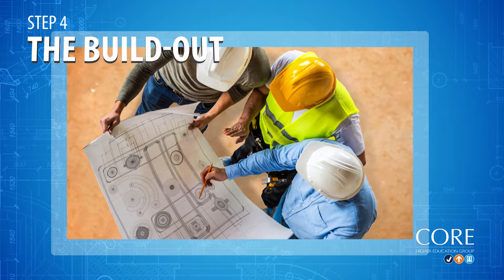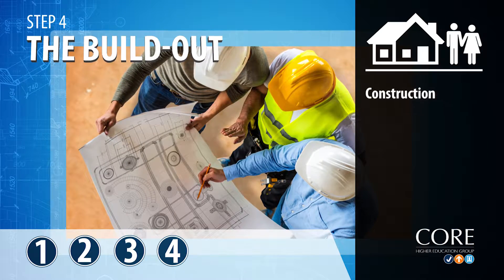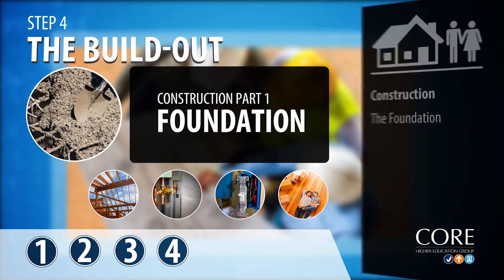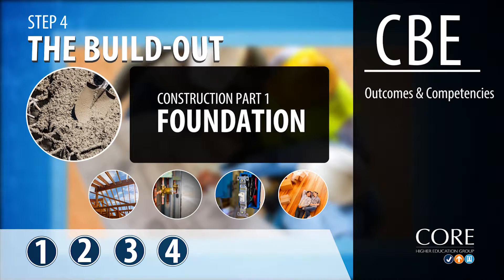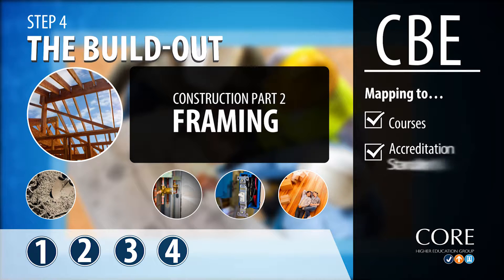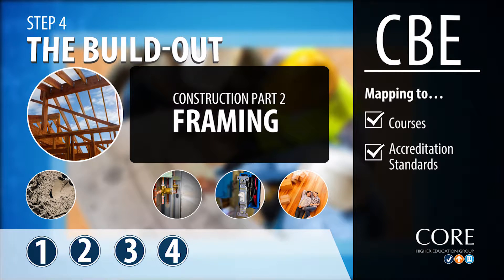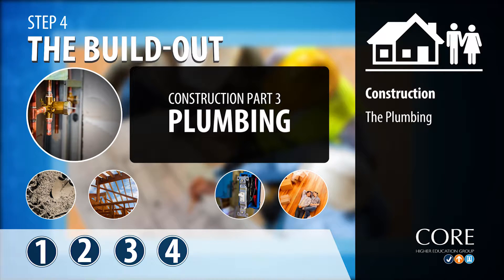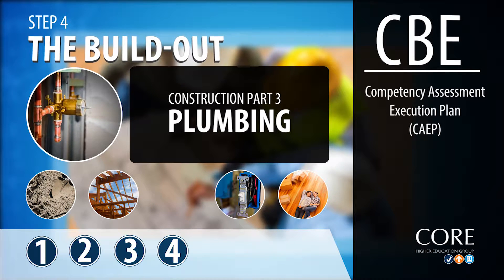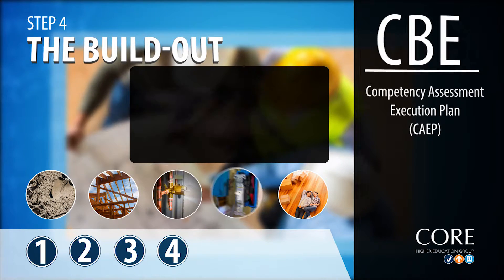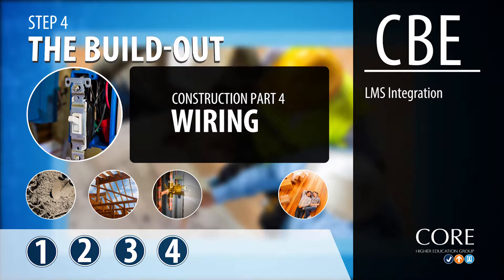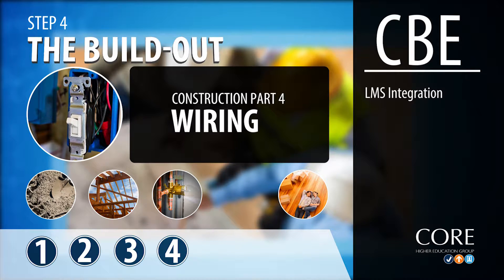The fourth step is the build-out of your CBE initiative — it is now time to construct the home. Construction is broken up into five components. First is the foundation: your outcomes and competency list. Next is the framing: mapping your competencies to your curriculum and to accreditation standards. Next is the plumbing: your Competency Assessment Execution Plan, or CAPE, allows for the seamless flow of communication to students and faculty regarding expectations and direction. Next is the wiring: integration of the CompMS with your LMS or SIS, connecting your competency management system with outside resources.